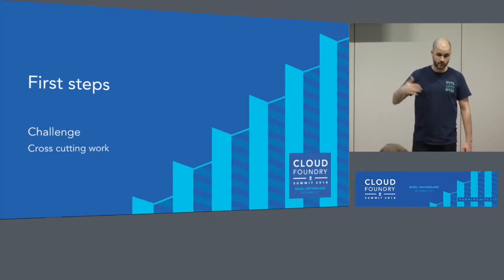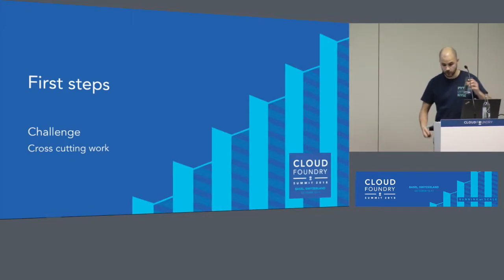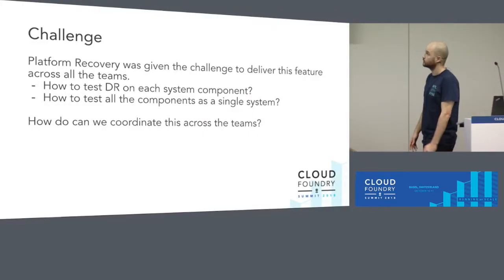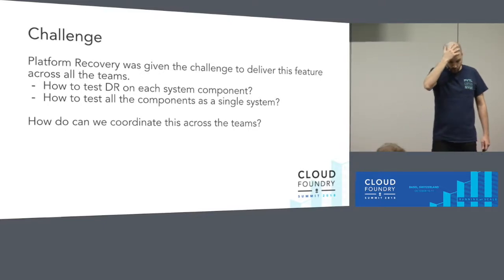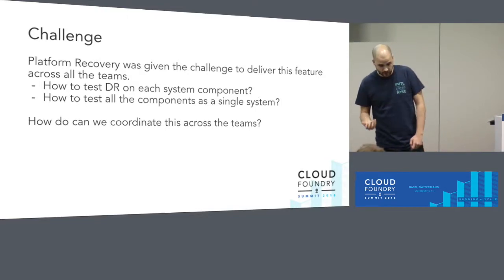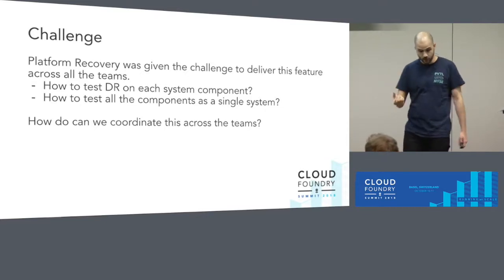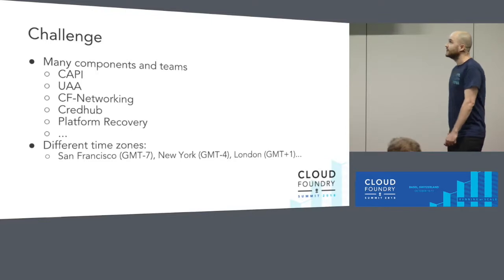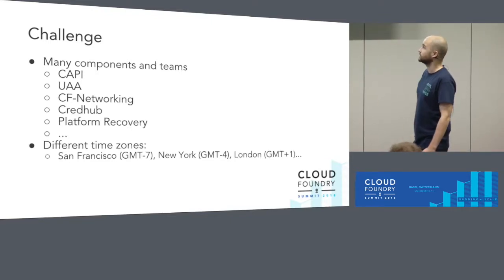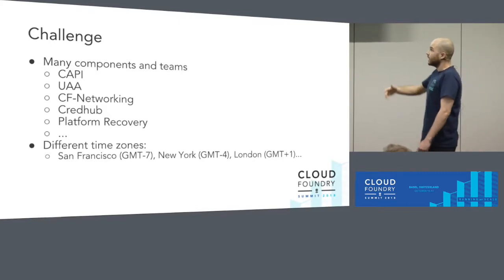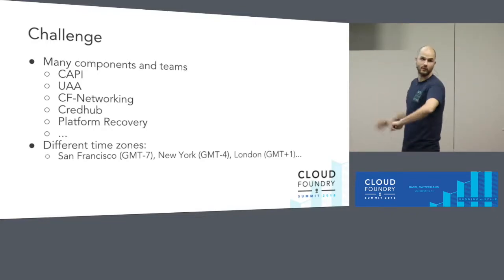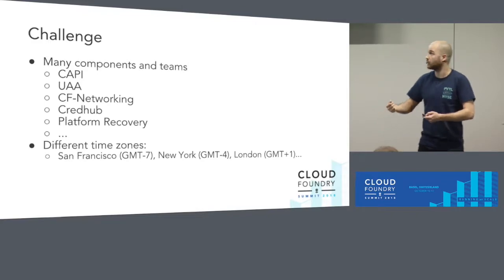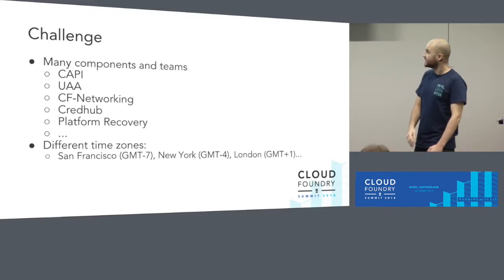Now let's talk about the first steps we took towards this challenge. We know how we want to have disaster recovery and how to test it, but how do we actually make it happen? The challenge was given to our team, Platform Recovery, to drive this feature across all the teams. But we had a bunch of questions: we don't really know how each component works in Cloud Foundry, we have an idea, but how do we test the DR strategy for each individual component? How do we make it work for the whole platform? And most importantly, how do we coordinate with all these people across teams like CAPI, UAA, Networking, CredHub, and our team — all distributed in different time zones across the US and Europe? We have a technical problem and a process problem.